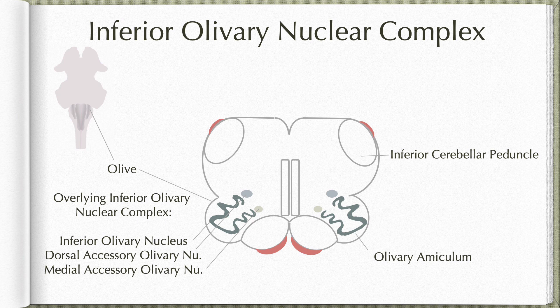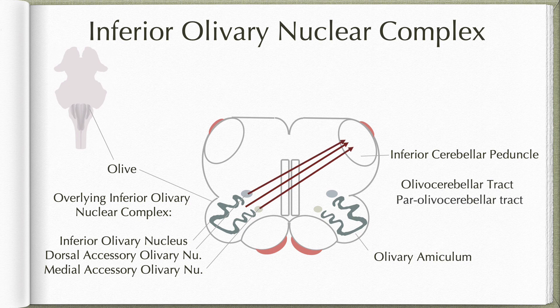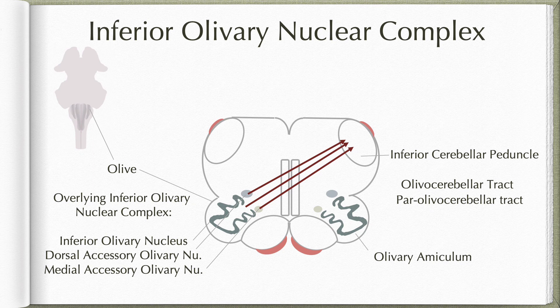Fibers from the inferior olivary nucleus form the olivocerebellar tract, and fibers from the medial and dorsal accessory olivary nuclei form the par-olivocerebellar tract. These tracts cross the midline by cutting through the medial lemniscus and reticular formation to reach the contralateral inferior cerebellar peduncles, through which they reach the cerebellum. These are the only afferents to the cerebellum known as climbing fibers, because they climb straight to the molecular layer of the cerebellar cortex and terminate directly on the dendrites of Purkinje cells, whereas all other inputs reach the granular layer and are known as mossy fibers.